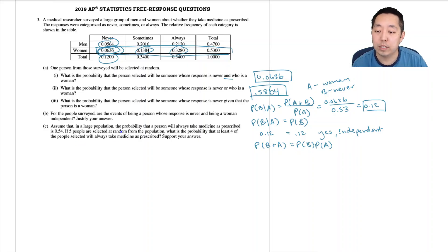Assume that in a large population the probability that a person will always take medicine as prescribed is 0.54. If five people are selected at random from the population, what is the probability at least four of the people selected will always take medicines as prescribed? Support your answer. You have to recognize this is a binomial distribution.